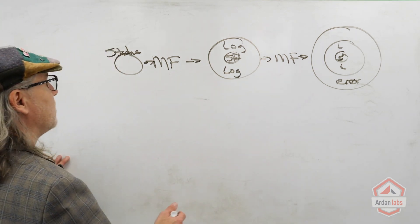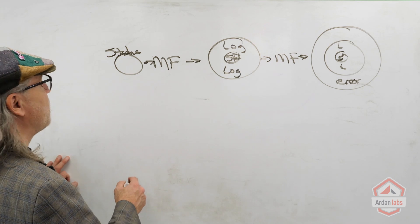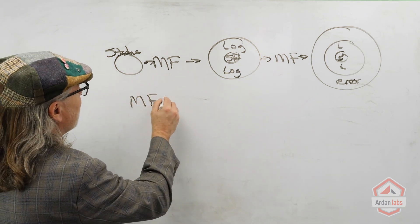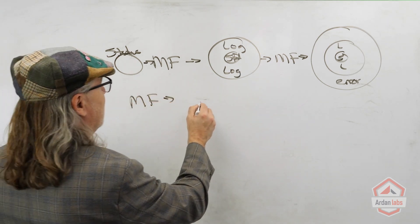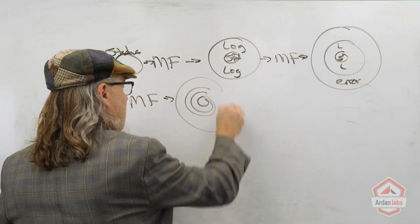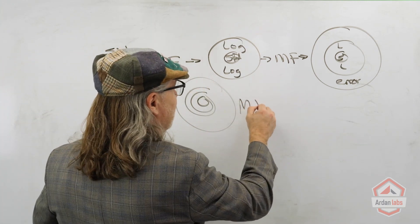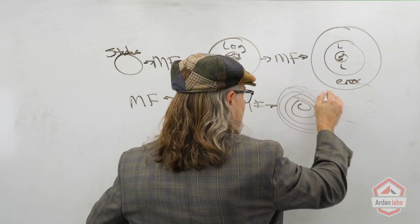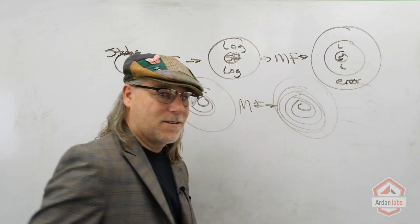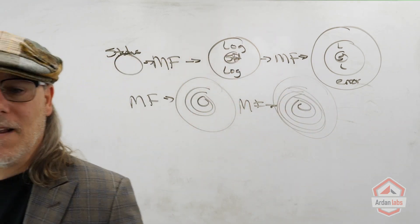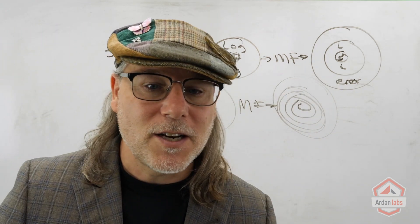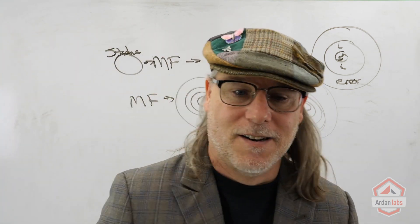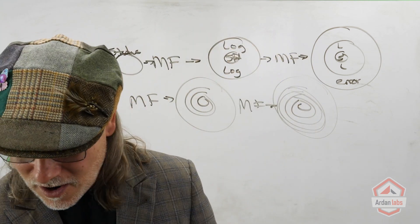Maybe we want to do some panic handling, or some form of metrics. We get our middleware function again and apply the same pattern — you get it. Function in, larger function out; function in, larger function out. That's what this is all about.